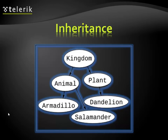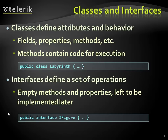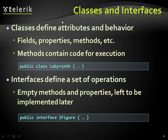The first thing is inheritance, which we're already familiar with. Classes define attributes and behavior. The word 'attributes' relates to a specific building block of the C# language — there is something called an attribute that you can decorate your methods with. For now, the word attribute will have to do. Classes have fields, properties, and methods — these are the basic ones that will almost always be there. Methods contain code for execution.